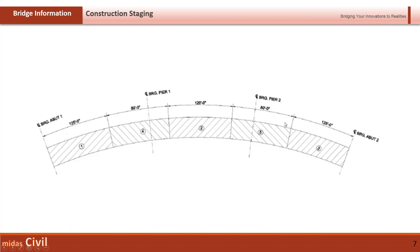This is the construction staging information. We have negative moment zones and positive moment zones. The positive moment zones will be constructed first in phase one, then the negative moment zones will be constructed in the second stage.